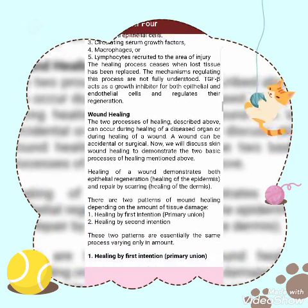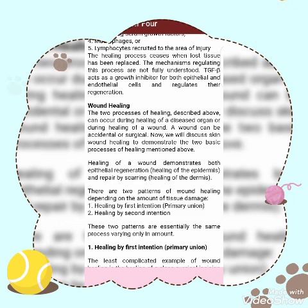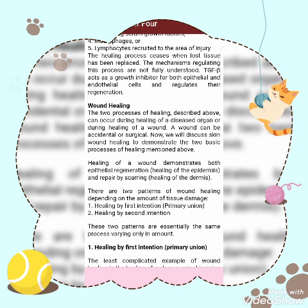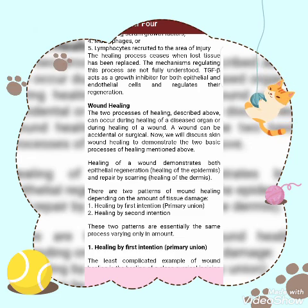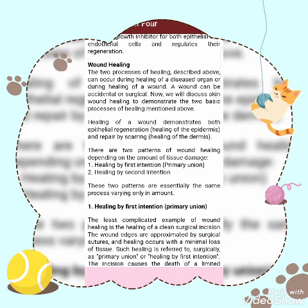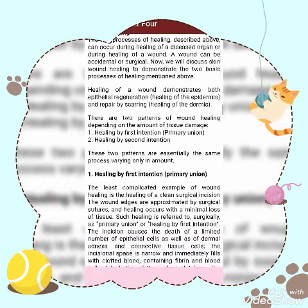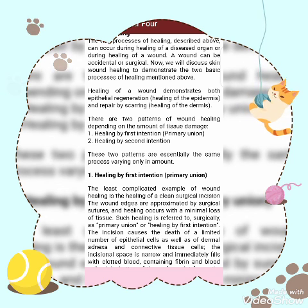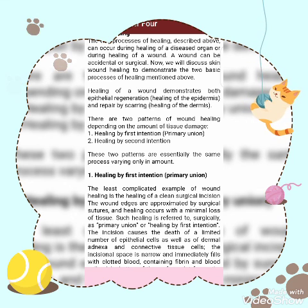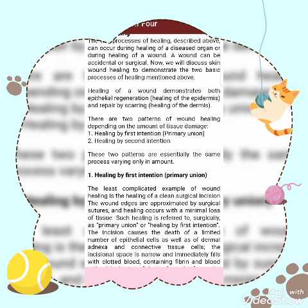The two processes of healing described above can occur during healing of a diseased organ or during healing of a wound. A wound can be accidental or surgical. Healing of a wound demonstrates both epithelial regeneration — healing of the superficial epidermis — and repair by scarring — healing of the dermis. There are two patterns of wound healing depending on the amount of tissue damage: healing by first intention (primary union) and healing by second intention (secondary union). These two patterns are essentially the same process, varying only in the amount of tissue involved.